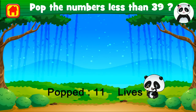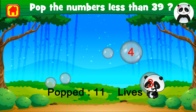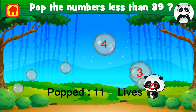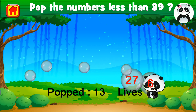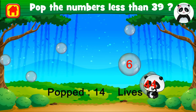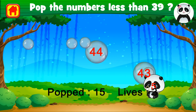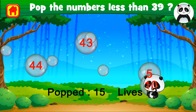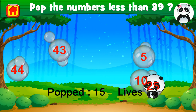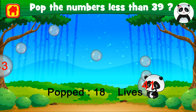Pop the bubbles with numbers that are less than 39. Let's pop the numbers which are less than 39. 4 — brilliant. 3 — well done. Thank you. But 44 is greater than 39. 43 is also greater than 39. 5 is less than 39 — let's pop it. Well done. 10 — awesome. 25 — awesome.